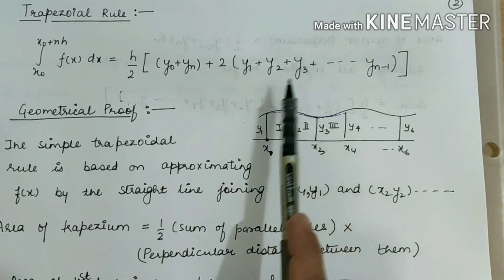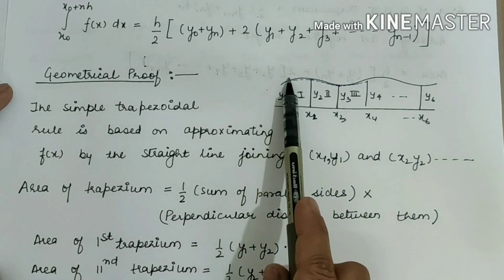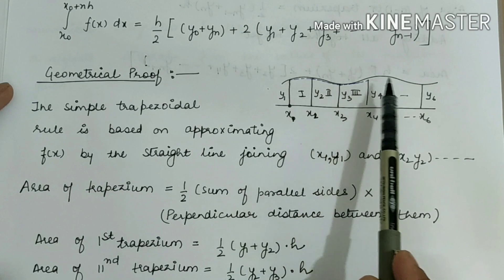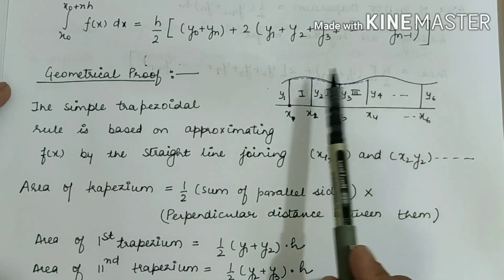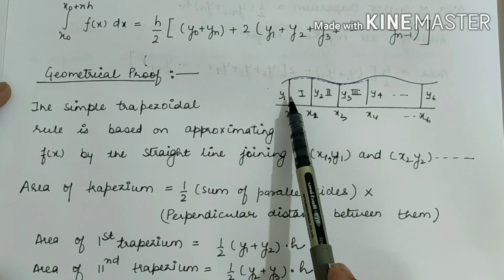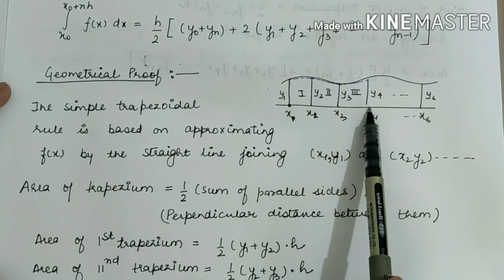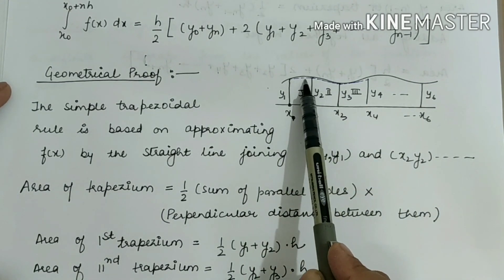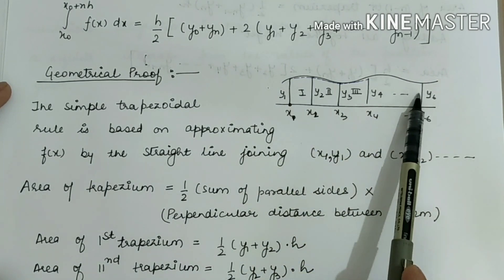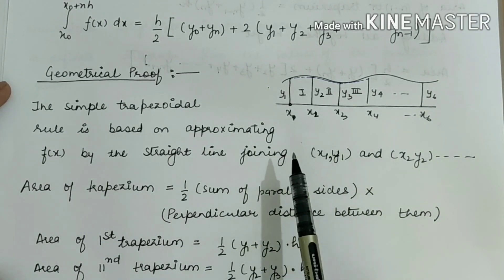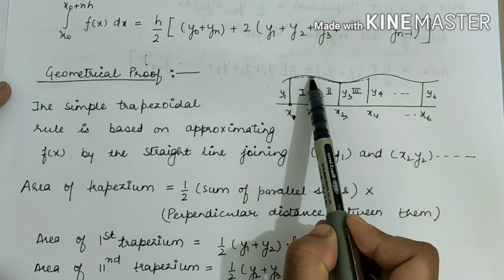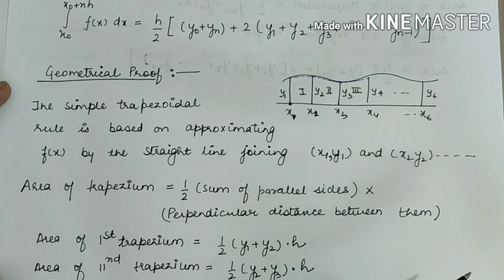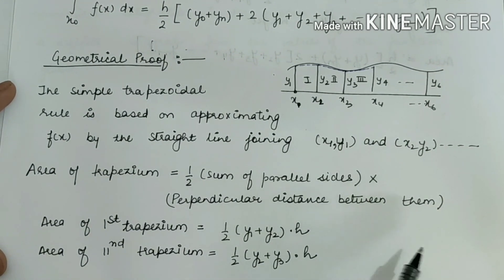Now for the geometrical proof or derivation: we take a curve, draw points on the x-axis, and join the curve points to the x-axis. The first and last points are x0 to x6, giving us lines y1 through y6, creating small sections within the big area. If we join straight lines — ignoring the curve and drawing a line close to it — we get the shape of a trapezium.